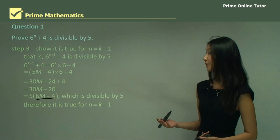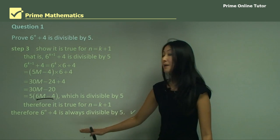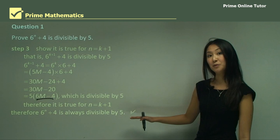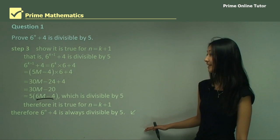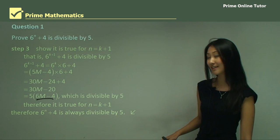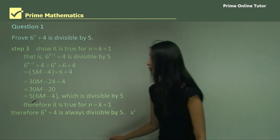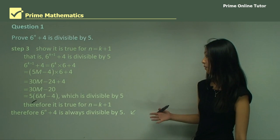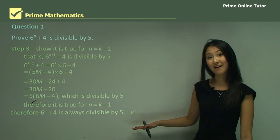So how we write the conclusion for this is: therefore six to the power of n plus four is always divisible by five. As previously, we need to have this conclusion, but rather than saying it is true for n greater than zero or one, we say it's always divisible by five.